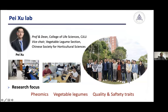First, please allow me to introduce myself and my team. My name is Pei Shu. I'm currently Professor and Dean at the College of Life Sciences at China Jiliang University, located in Hangzhou City, very close to Shanghai. I'm also serving as Vice Chair of the Vegetable Legume Section of the Chinese Society for Horticultural Sciences. My team is very young, and research in my lab focuses on plant phenomics, vegetable legumes including common beans, cowpeas, and garden peas, and improvement for quality and safety traits.